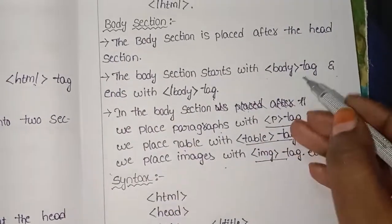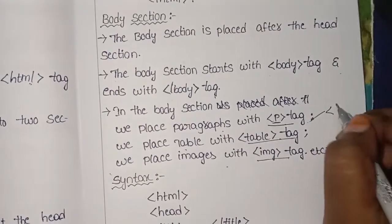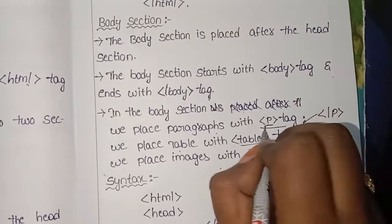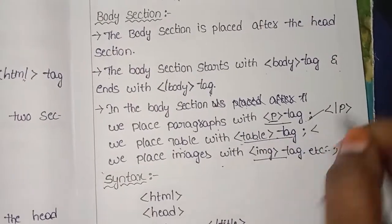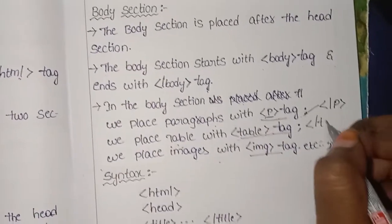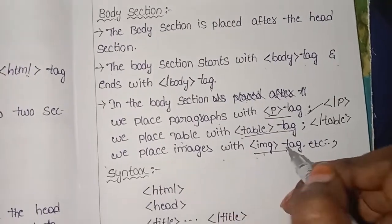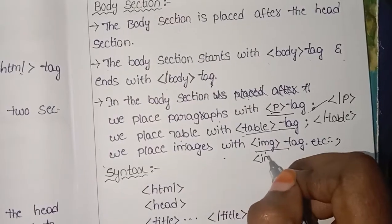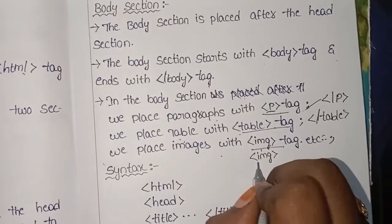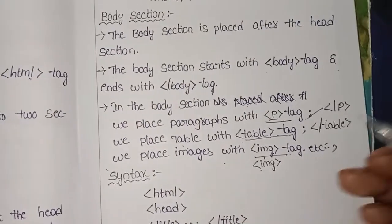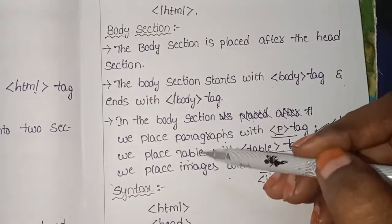Inside the body section, we place the paragraph tag, which is the p tag. Next we place the table tag, and for images we use the image tag. Audio and video elements are also placed in the body section. This is the syntax of the body section.